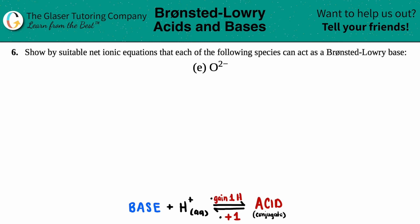Number six, show by suitable net ionic equations that each of the following species can act as a Bronsted-Lowry base. And then we have letter E out of the bunch. So in this case, we just need to write a net ionic equation explaining how O²⁻ can act as a Bronsted-Lowry base.